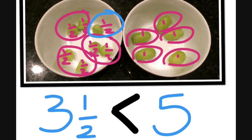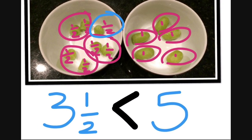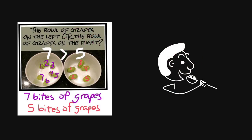So mathematically, the bowl of grapes on the right has more grapes, technically. Now, if you're considering eating these grapes and you choose the bowl on the left, you have seven bites of grapes.